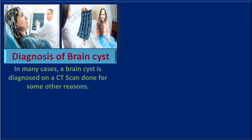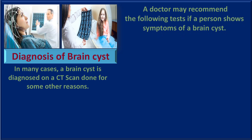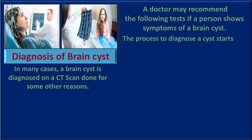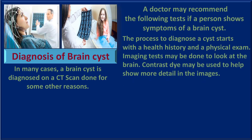Diagnosis of brain cysts: in many cases a brain cyst is diagnosed when a CT scan is usually done for some other reasons. A doctor may recommend the following tests if a person shows symptoms of a brain cyst. The process to diagnose a cyst starts with a health history and a physical examination. Imaging tests may be done to look at the brain.